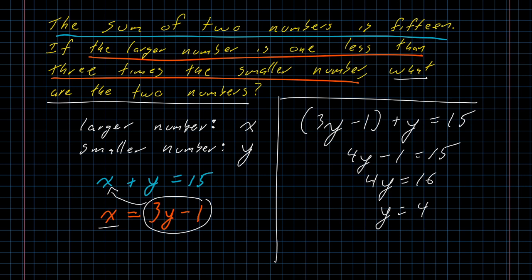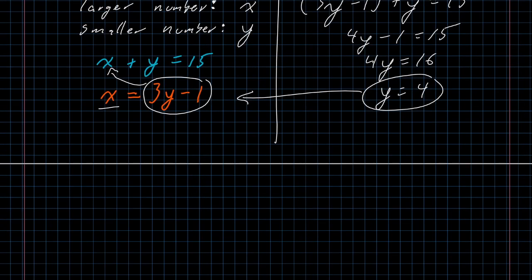All right, that's half of our answer, but again we have two unknowns. So now that we have solved for y, we now need to take that and put it into the other equation to solve for x. x equals 3 times y, but we now know that y is 4 minus 1. And I get that x is 11.